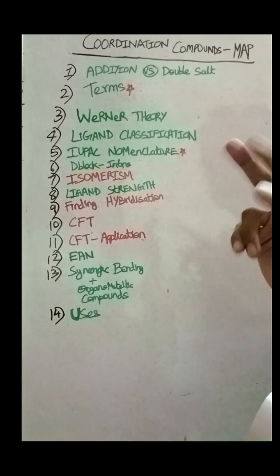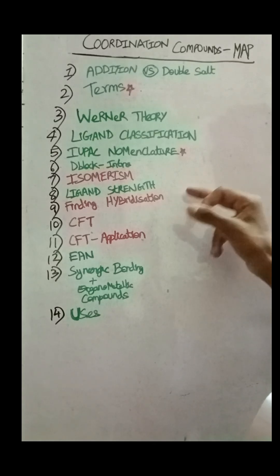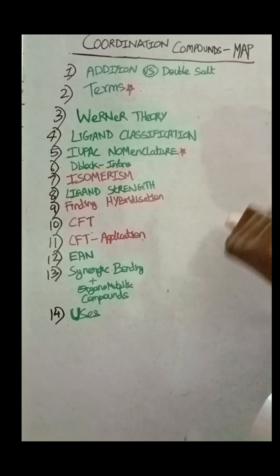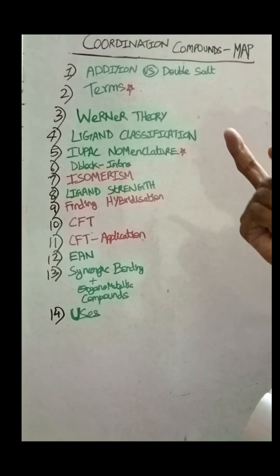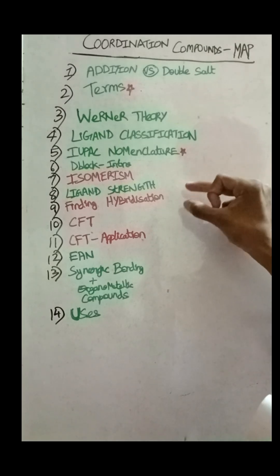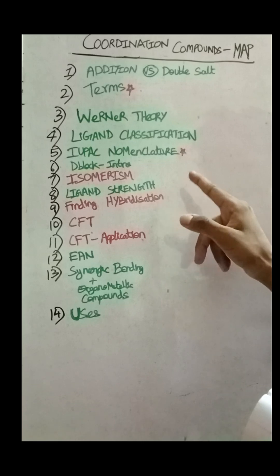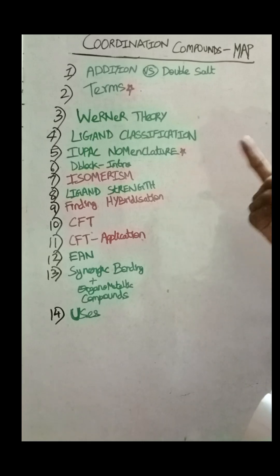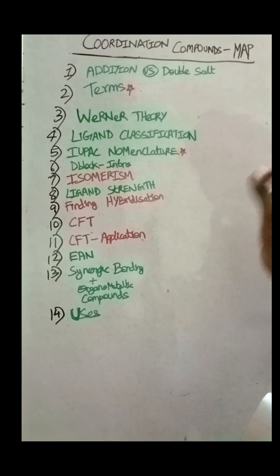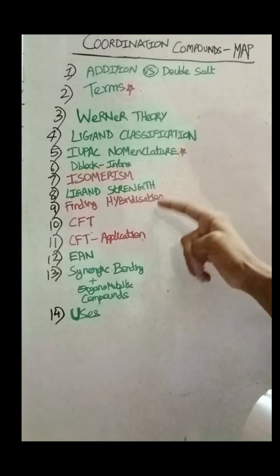Hybridization is what we learn in chemical bonding. It does not always need to be separate from the coordination compound. After hybridization, we see how to determine the shape — the whole component leads to shape.